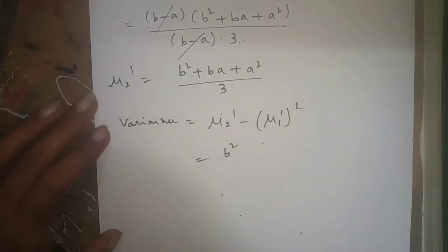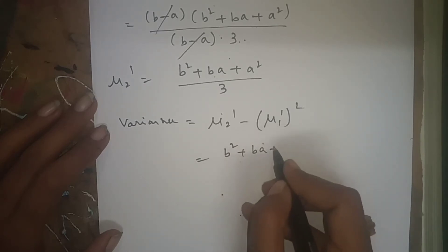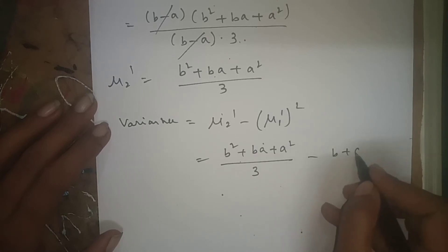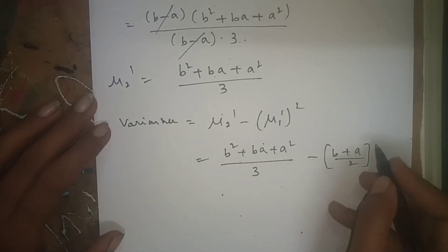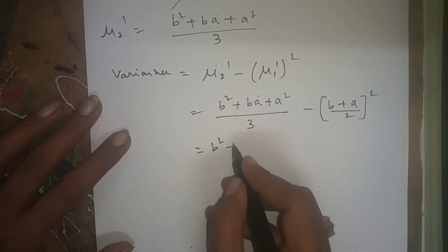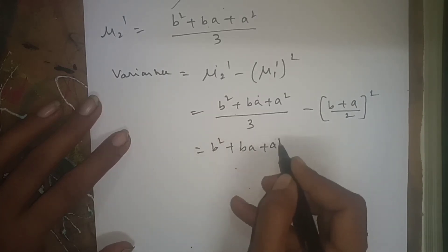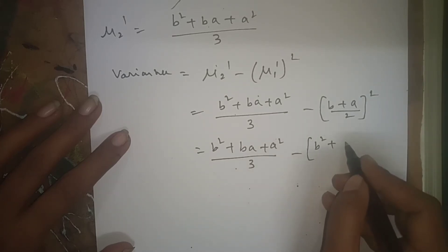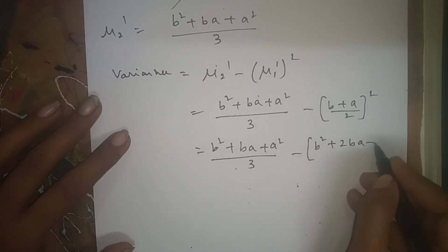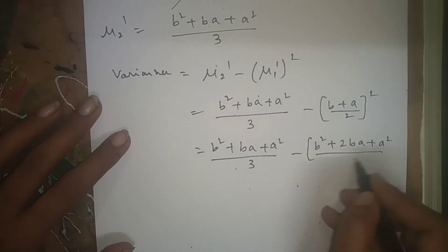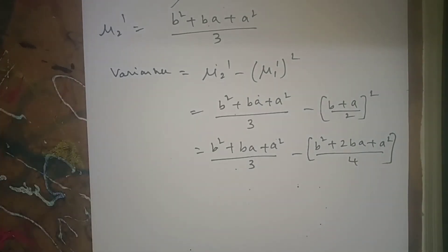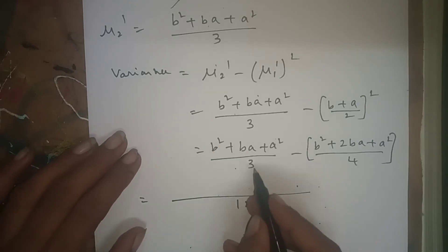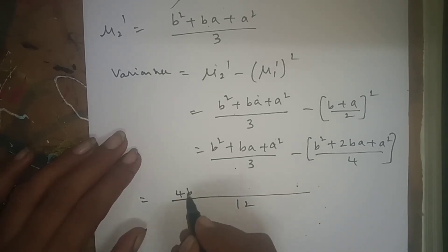Variance = μ'_2 − (μ'_1)² = (b² + ba + a²)/3 − [(b + a)/2]². Expanding: (b² + ba + a²)/3 minus (b² + 2ba + a²)/4. Taking LCM = 12: [4(b² + ba + a²) − 3(b² + 2ba + a²)] / 12.